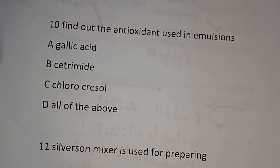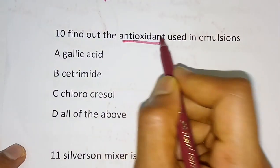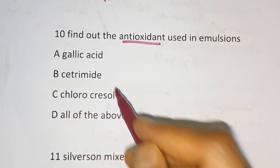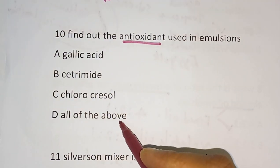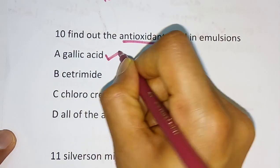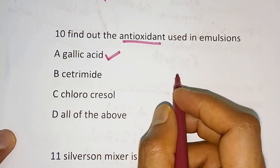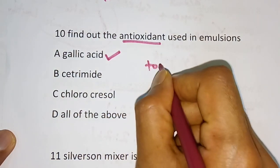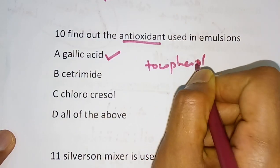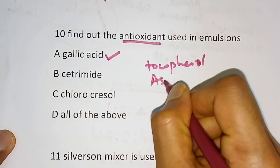Question number 10: Find out the antioxidant used in the emulsion. Options are gallic acid, cetrimide, chlorocresol, all of the above. The correct answer is gallic acid. Other examples of antioxidants used in emulsion include tocopherol, propyl gallate, and ascorbic acid.